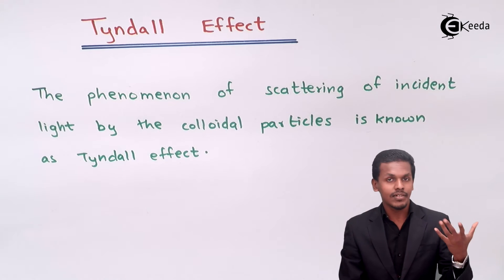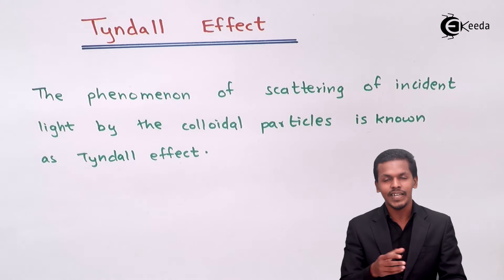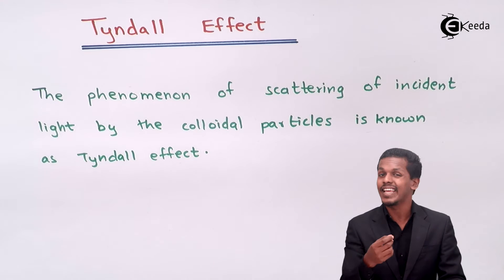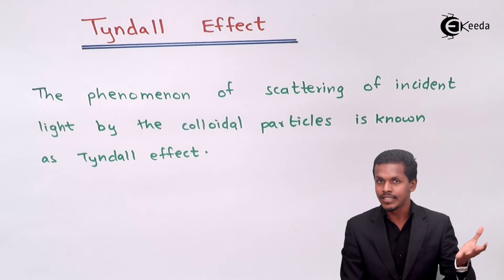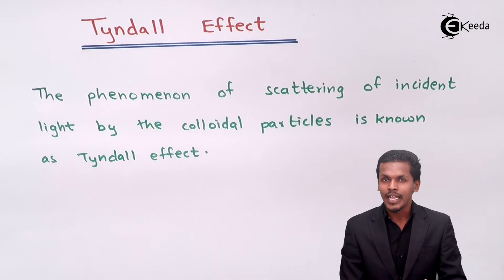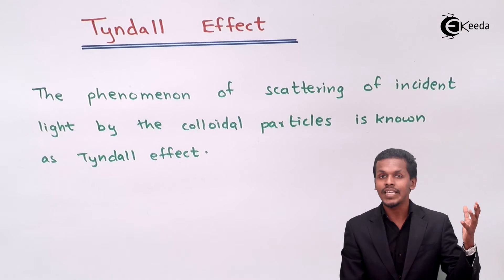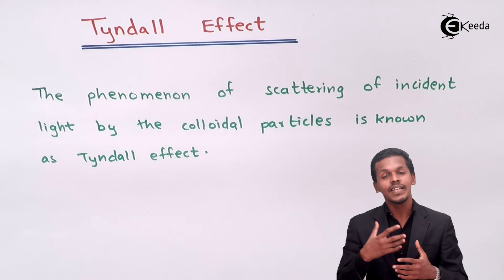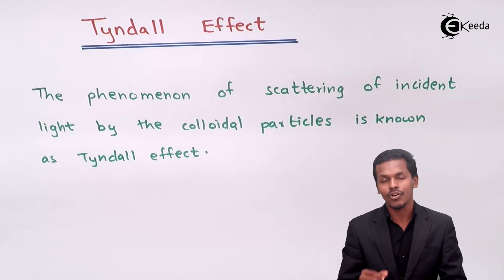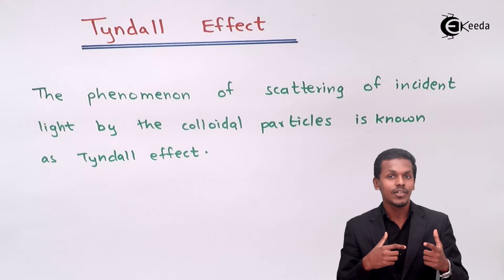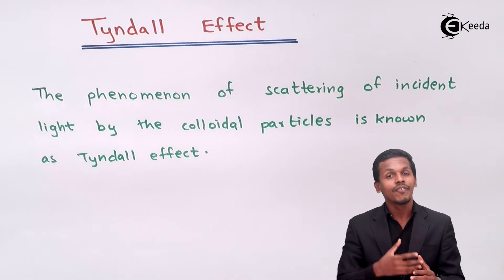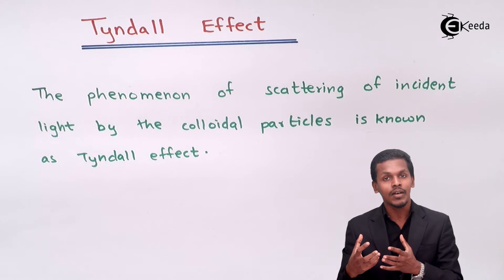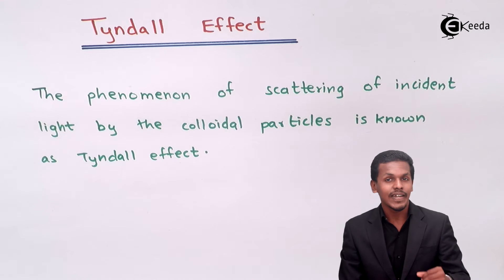Whenever light is incident on a true solution, since the particles in a true solution are very minute, scattering of light is not observed. But colloidal particles have a particular size, and because of that, whenever incident light hits the colloidal particles, this size causes the light to scatter in such a way that a visible effect is produced. This phenomenon is known as the Tyndall effect.